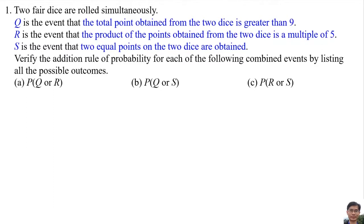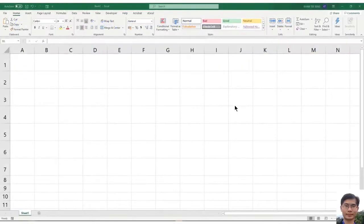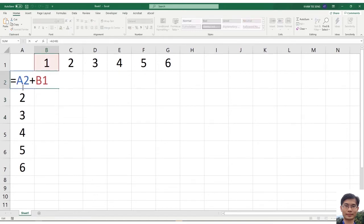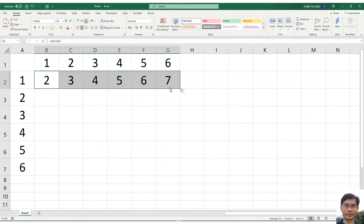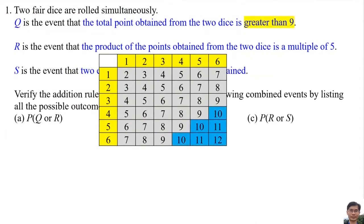First, we list out all the possible outcomes for Q, R, and S. We can use Excel to list out all the possible outcomes for Q and R. For event Q — total greater than 9 — the possible outcomes are: (4,6), (5,5), (5,6), (6,4), (6,5), and (6,6). Then we use Excel to list out all the possible outcomes for R.